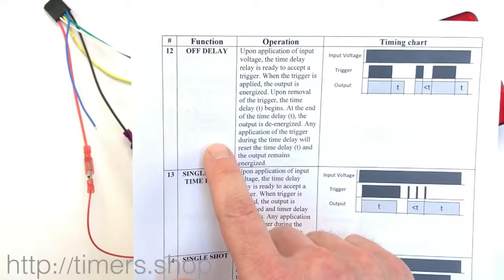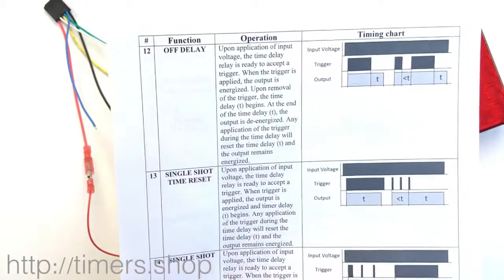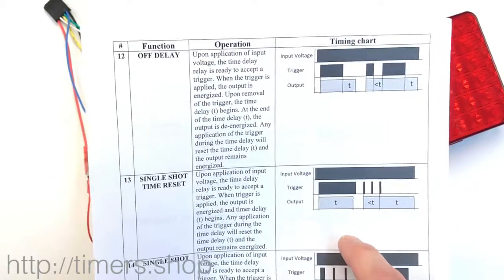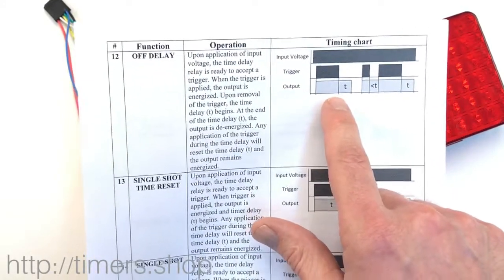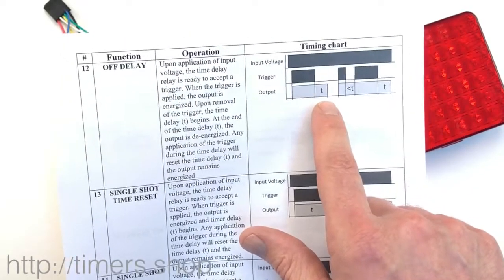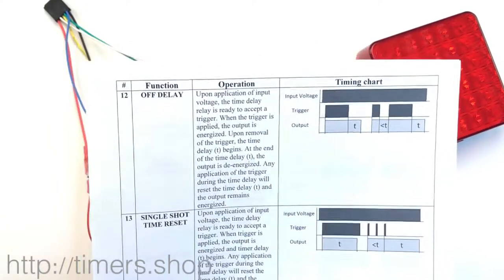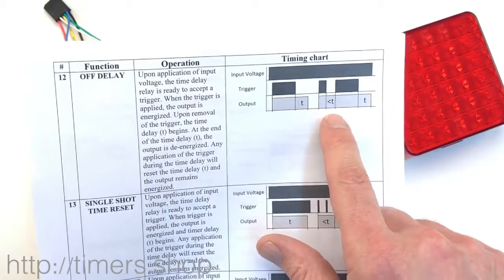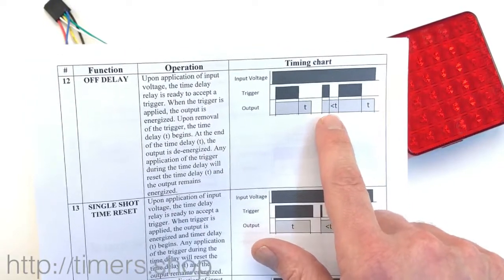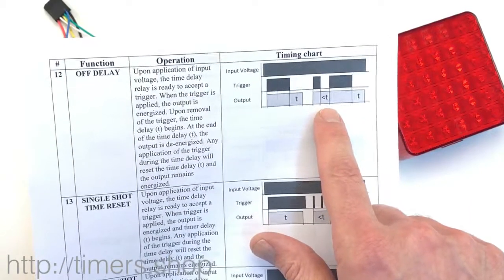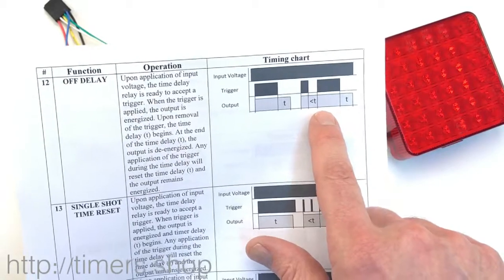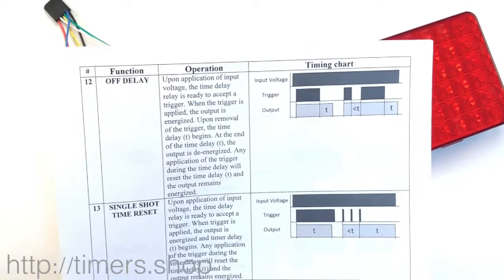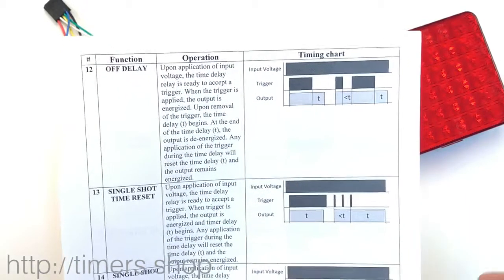You would configure the timer to function number 12 and configure the trigger. When you supply the power, nothing happens. When the trigger comes on — ignition comes on — the output turns on and stays on. When the ignition turns off, the countdown starts. If it counts to your set interval, let's say one hour, it turns off. If ignition comes back on before the timer expires, it resets the timing and it's going to wait again until that ignition turns off again.